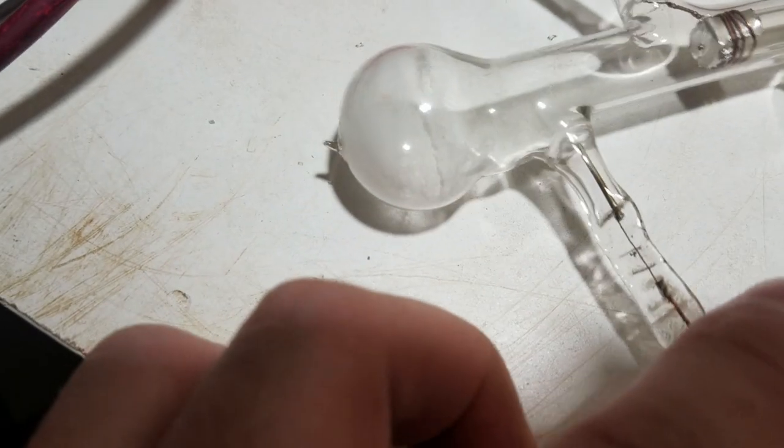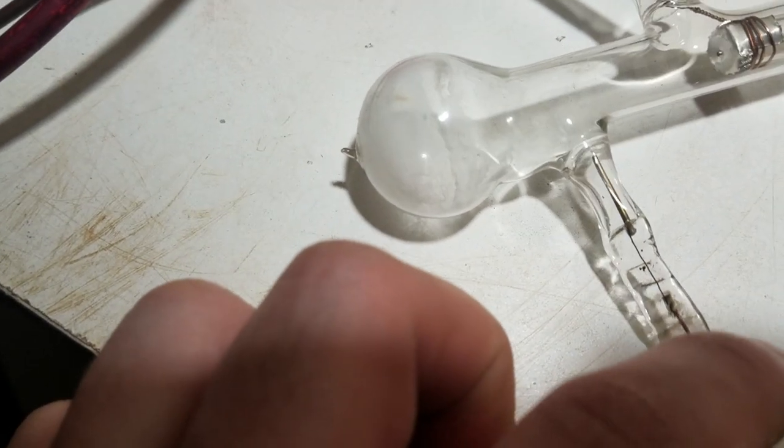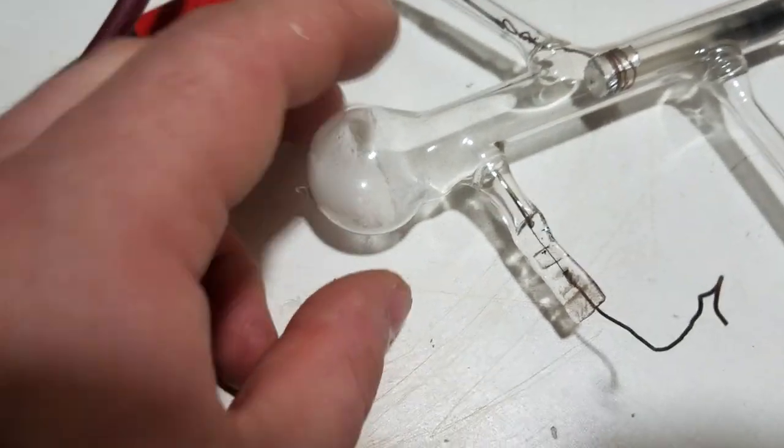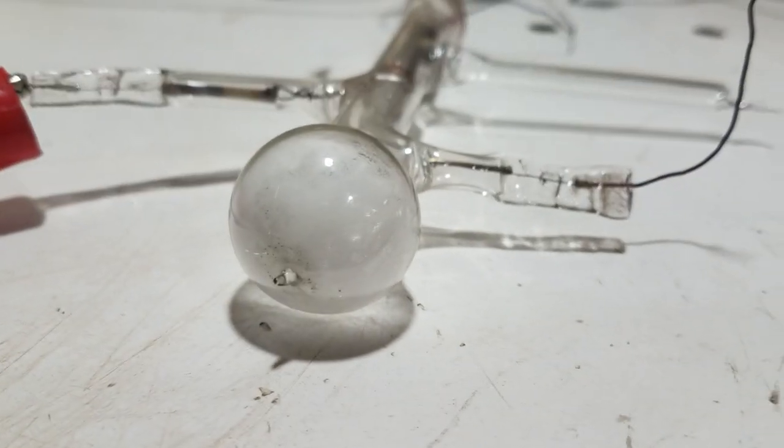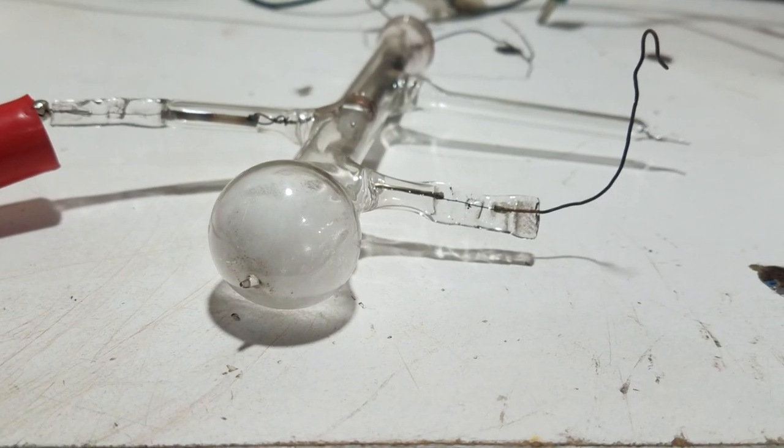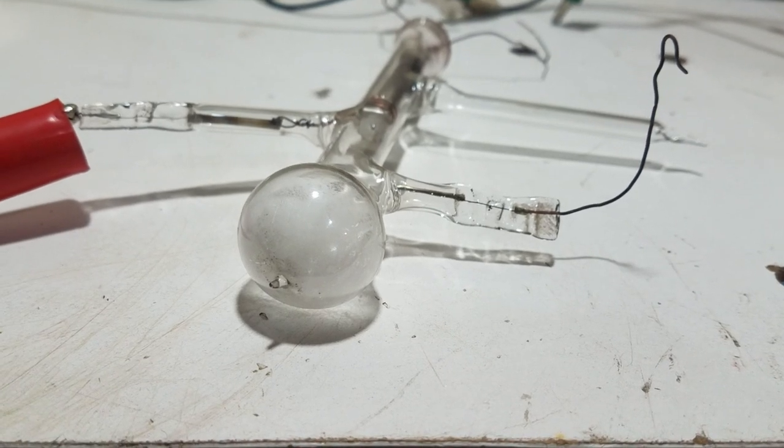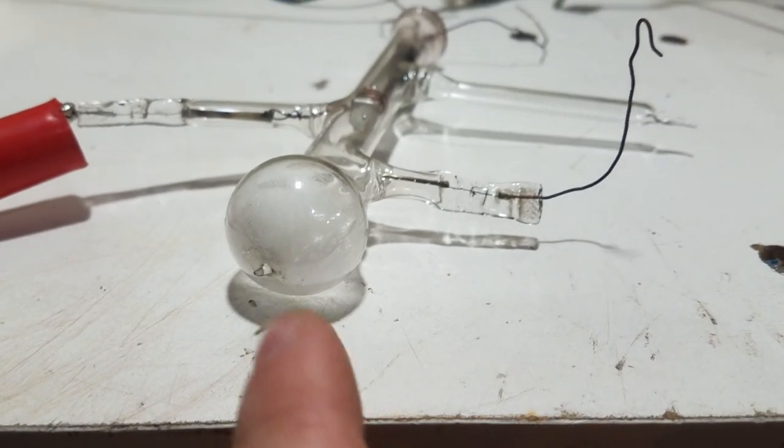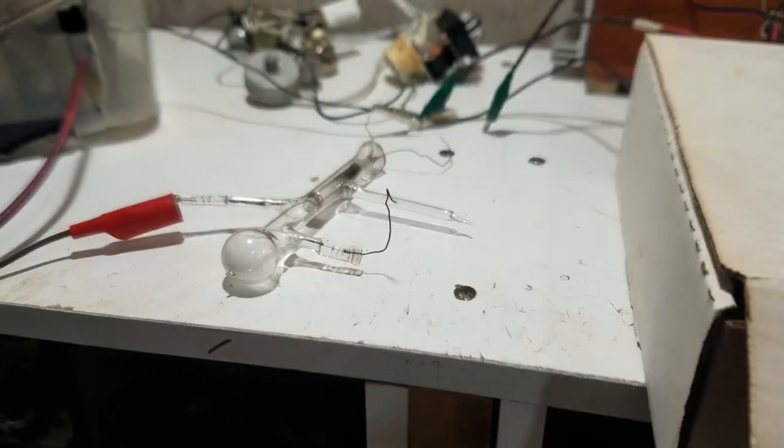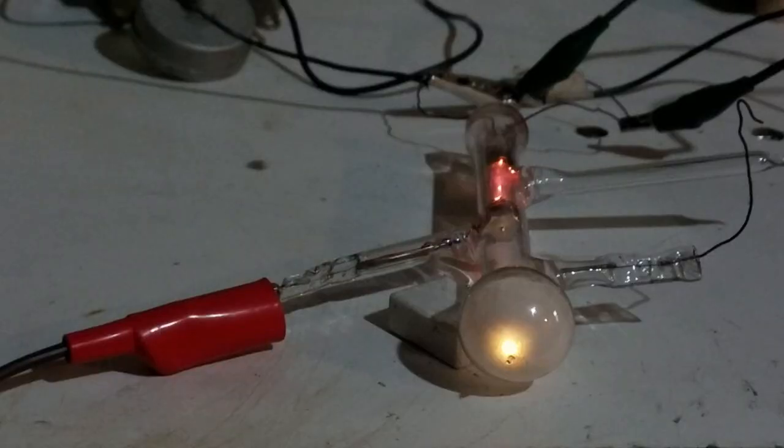And then over here I have like a post-deflection anode, but that's really not necessary. I just wanted to experiment with it. And at the front right here is the coating from the inside of a fluorescent lamp that was just applied with a little water and then let to dry. This is actually really hard to get right without being splotchy. So I'm going to turn on the power supply and see what it does.